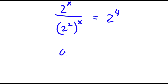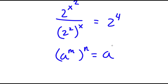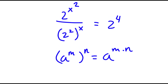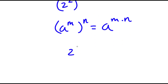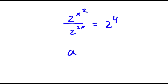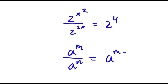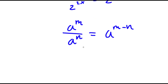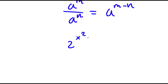Now if I have something in the form a to the power of m to the power of n, this is equal to a to the power of m times n. So 2 to the power of 2 to the power of x equals 2 to the power of 2x. Now I have 2 to the power of x squared over 2 to the power of 2x is equal to 2 to the power of 4. Using the quotient rule, this gives 2 to the power of x squared minus 2x is equal to 2 to the power of 4.